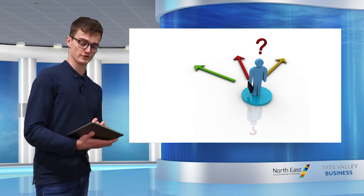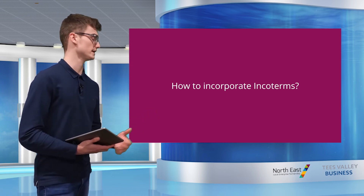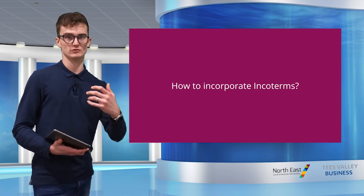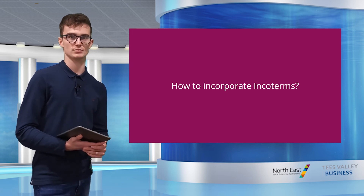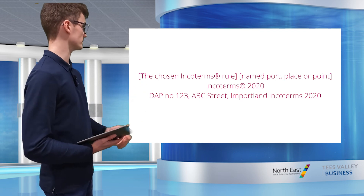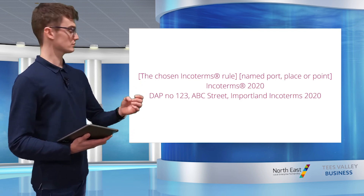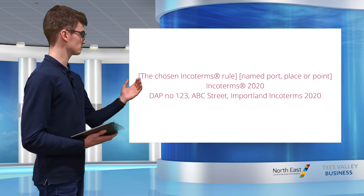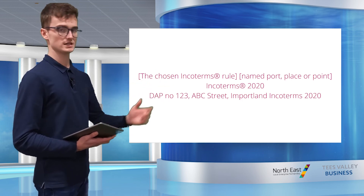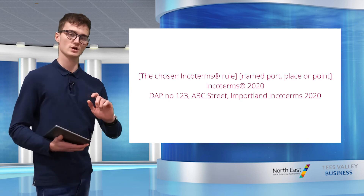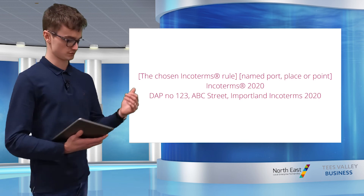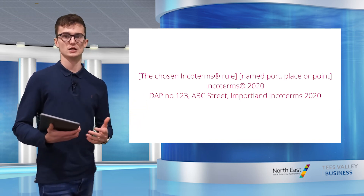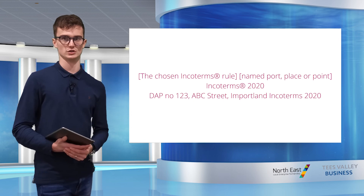How do we go about correctly incorporating Incoterms? It's important that you make the agreed Incoterm clear in your contracts and commercial invoices. Ideally it should always be written in a specific format: the chosen Incoterm at the beginning — for example DAP — followed by the named port, place or point, and finally this statement should be finished by including the words 'Incoterms 2020'. Since the Incoterms are regularly updated, by putting the year at the end you notify all parties which version of the Incoterms you are referring to.